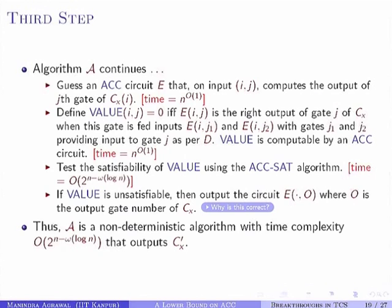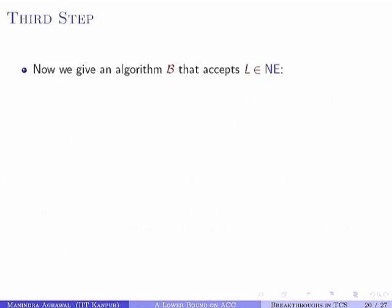We use the ACC-SAT algorithm to check satisfiability of the predicate circuit. If value is unsatisfiable, then E is globally correct. Once E is verified correct, the circuit C'_x is simply E evaluated at the output gate. Algorithm A therefore runs in non-deterministic time 2^{N - omega(log N)} and produces an ACC circuit C'_x equivalent to C_x.